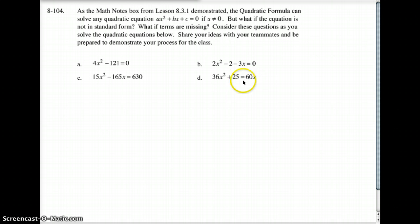And then finally on this one, hopefully you can notice now what's wrong here. That's right, it doesn't equal zero. So you're going to subtract 60x from both sides and solve that one using the quadratic formula. By the way, quick little note to you.